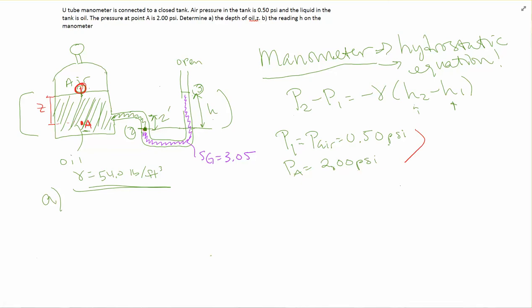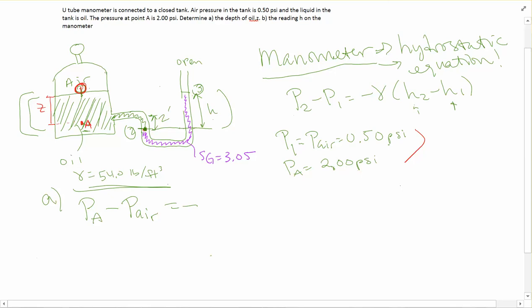Let's go ahead and use our hydrostatic equation between point 1 and point A to find Z first. So we're going to have P_A minus the pressure at point 1 (which is the air pressure) equals negative gamma for oil, since that's the fluid we're working with. Now let's pick a reference point that we're going to use consistently for the whole problem.